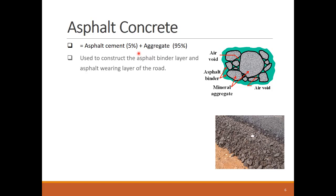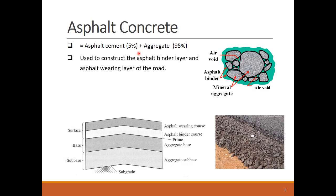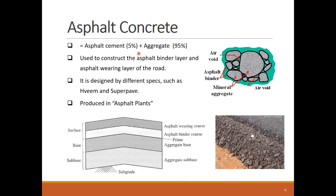The mix of the asphalt concrete is designed using different standard specifications like HV and Superpave, and the mix is produced in asphalt plants. Asphalt concrete is used to construct the asphalt surface courses in the pavements, namely the wearing course and the binder course. This photo shows the different look of the binder and wearing courses, and you can see the aggregate size difference between them.